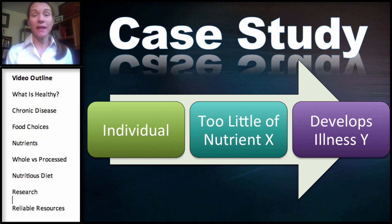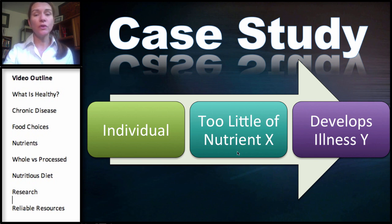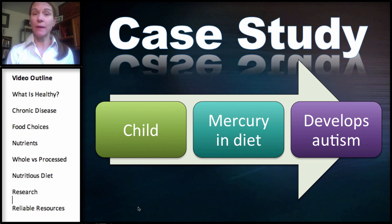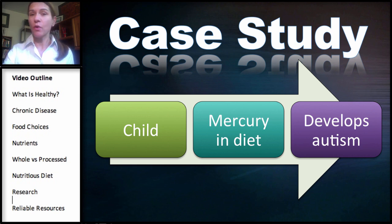A case study is generally a study on an individual, or it could be a number of individuals, and we're generally making an observation. For example, if an individual has too little of Nutrient X and develops illness. An example of this would be observing that a child who had mercury in the diet developed autism. What's important to note about case studies is they are more observational — they give us a lot of information for which researchers or investigators can then conduct more studies.